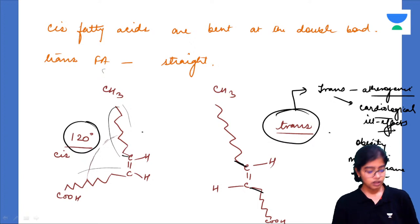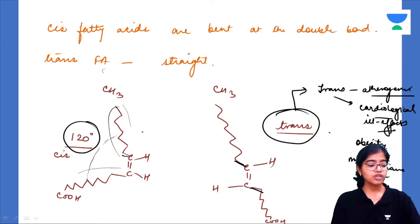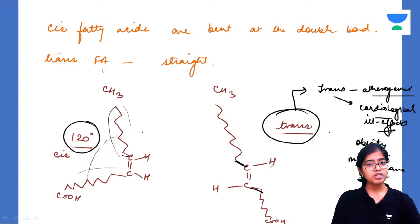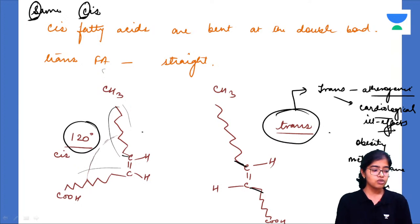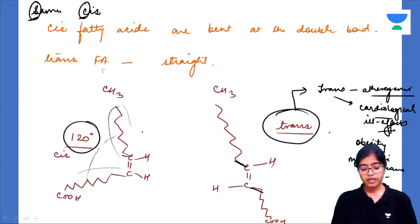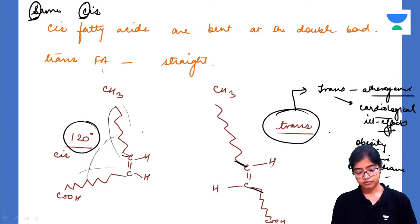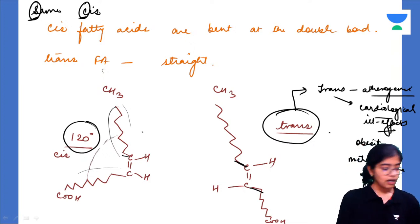To summarize cis and trans: you should know how to draw the cis structure bent at around 120 degrees about the double bond, and the trans structure which is straight with acyl groups on opposite sides. A memory tip: 'cis' starts with the same syllable as 'same' — so cis means same side.